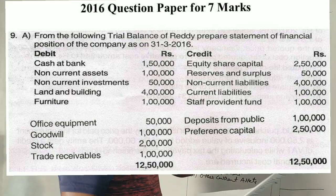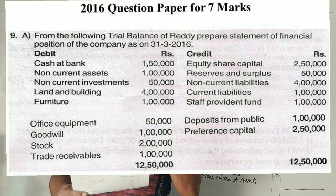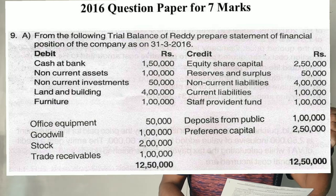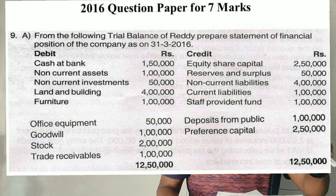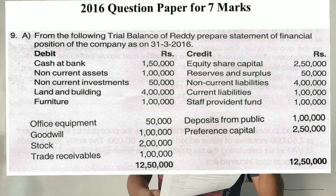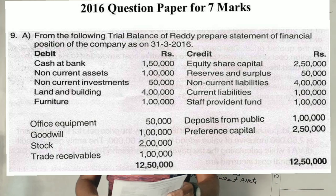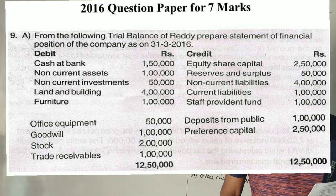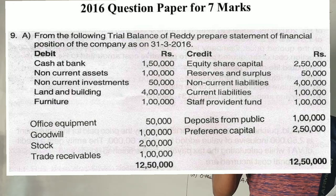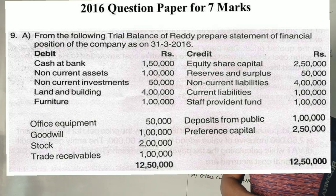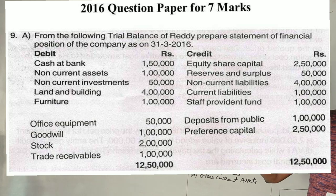Students, in 2016 IFRS, we have a 14-mark question. Question 9A and 9B — 9B is 7 marks. We have to prepare the note. First question: from the following trial balance of RETI, prepare the statement of financial position of the company as on 31st March 2016. The statement of financial position is nothing but the balance sheet.